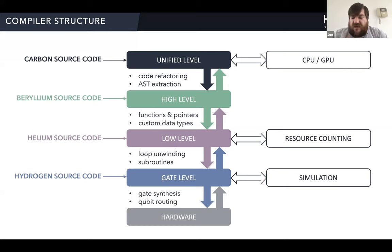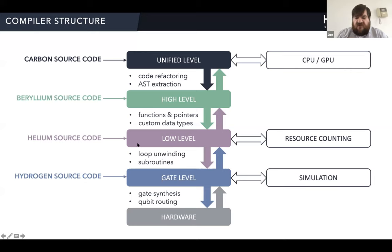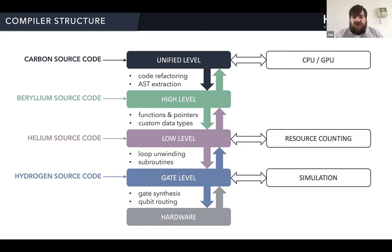At the lowest level, there's a gate-level language that's literally gate by gate, telling the device what to do — that interfaces with the hardware. I'm going to talk about these in basically reverse order: starting with what we're doing on the hardware front, then moving up to the gate level, then the low-level high-level quantum language, and ultimately the conversion of classical code to quantum code. I should say this is very much work in progress, but any concrete examples I show you will be stuff that's implemented.